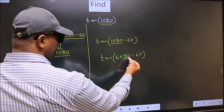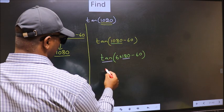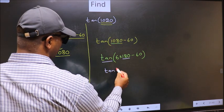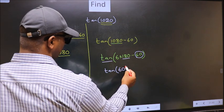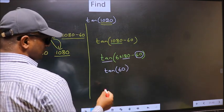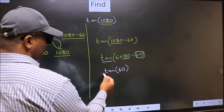Here we have 180. So tan is not going to change. It will remain tan. And inside, we get this angle 60. Now the question is, will we get here plus or minus?